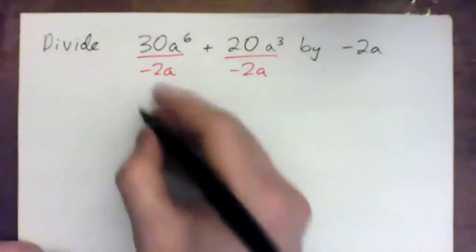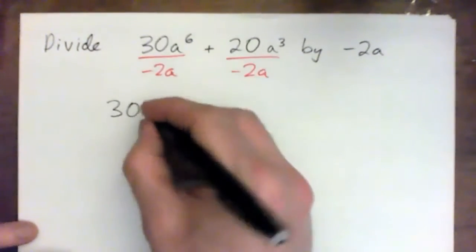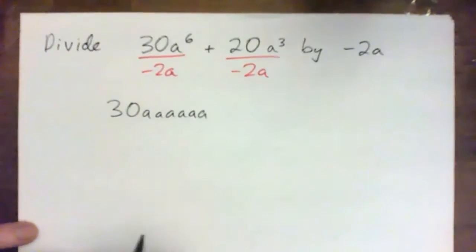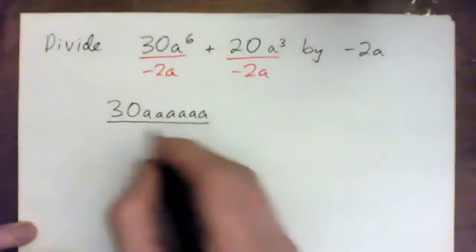And one caution I give all my students, again, is even though it's cumbersome, like just write out six A's, and then cross-cancel is probably the best policy.